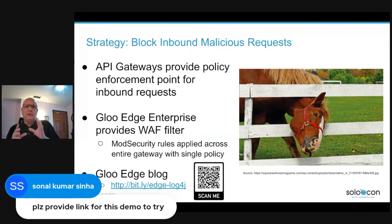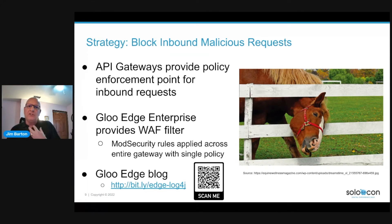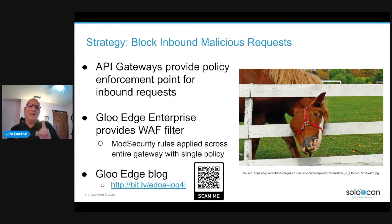So let's talk about an alternative: blocking requests at the ingress point by leveraging the enterprise edition of the Glue Edge API gateway. Specifically, we'll look at its web application firewall facility for applying mod security rules directly on board the Envoy proxy. Web application firewalls offer a standard mechanism to inspect incoming requests and apply a suite of mod security rules to ensure there's no malicious content. It can block many kinds of threats — SQL injection, JavaScript injection, plus requests from blacklisted IP addresses and much more.